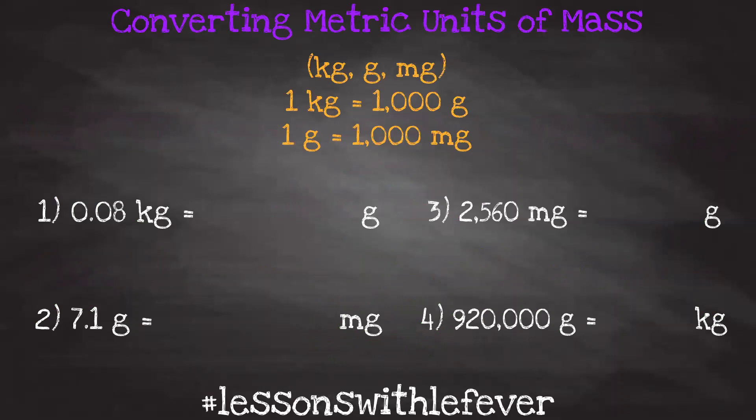Converting metric units of mass — kilograms, grams, milligrams. Here's what we need to know: 1 kilogram equals 1,000 grams, so 1,000 grams equals 1 kilogram. And 1 gram equals 1,000 milligrams, so 1,000 milligrams equals 1 gram.